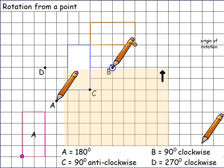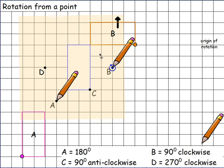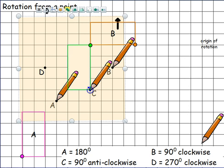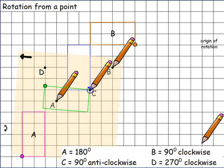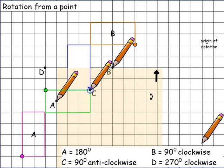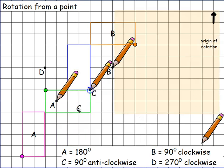Put the tracing paper back so the arrow is facing north, and now look at the third rotation: 90 degrees anti-clockwise. Put the tracing paper over point C and over the shape — use green this time. Place the pencil at point C. Going 90 degrees anti-clockwise means going to the left, so the arrow on the tracing paper will end up facing west. Rotate anti-clockwise, then label that rectangle C.